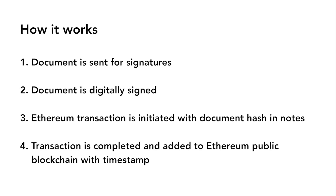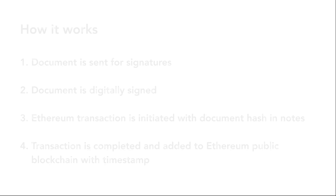Once you have enabled this feature, you can start signing or sending documents for signatures as you normally do. Now, however, whenever a document signing takes place, an Ethereum transaction is initiated in the background to which the hash value of the signed document is added in the transaction notes. Once this transaction is executed, the transaction information is added to the Ethereum public blockchain along with a timestamp.